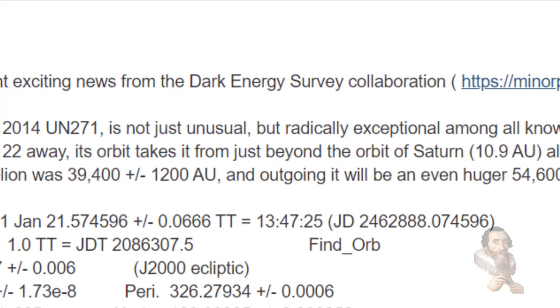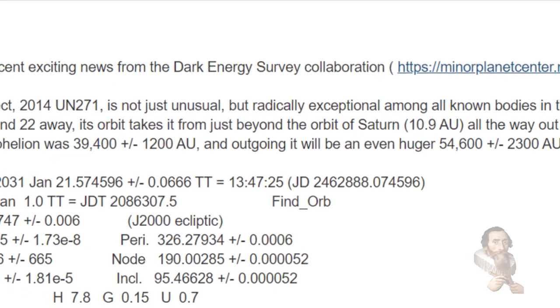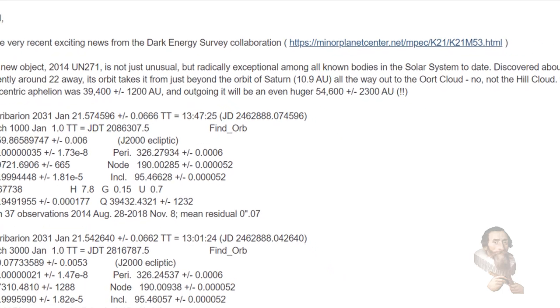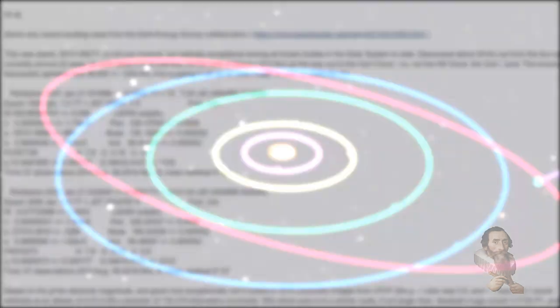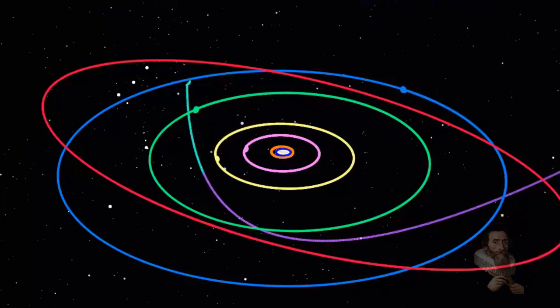The Megacomet, known as 2014 UN271, was identified by astronomers from the Dark Energy Survey who captured astronomical data from the object's known location near Neptune between 2014-2018. The object will make its way towards the Sun over the next 10 years, and citizen scientists predict that 2014 UN271 will be the same distance from the Sun as Saturn is by 2031, marking its closest approach to Earth for the first time in a whopping 600,000 years.